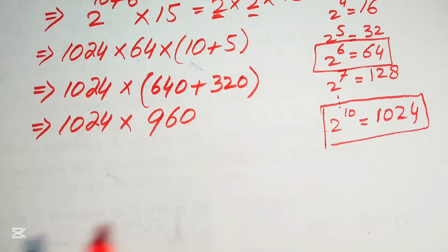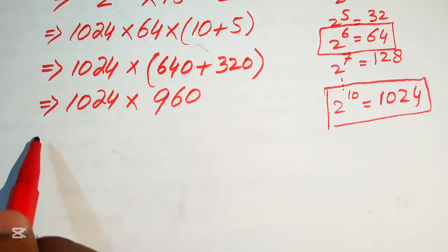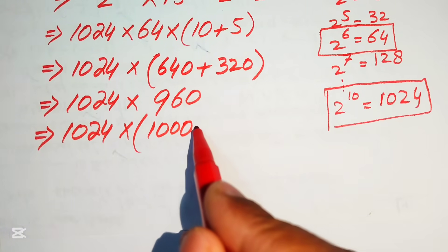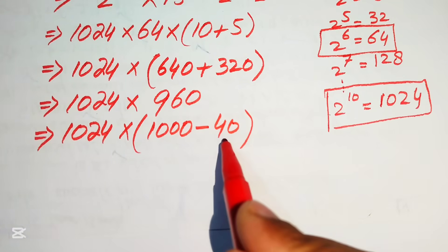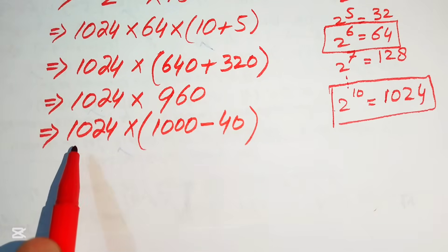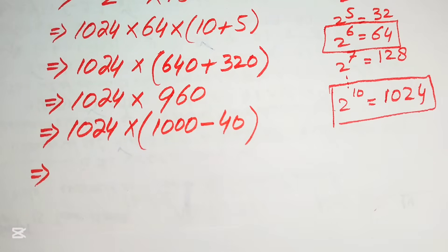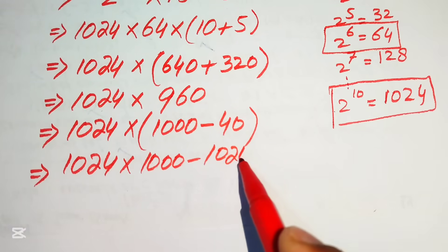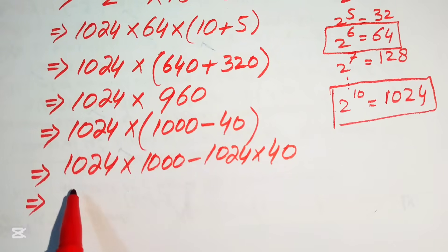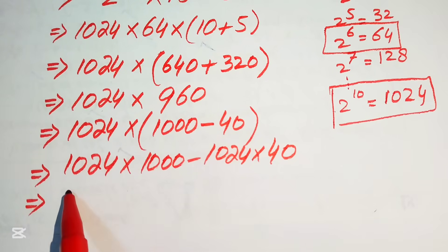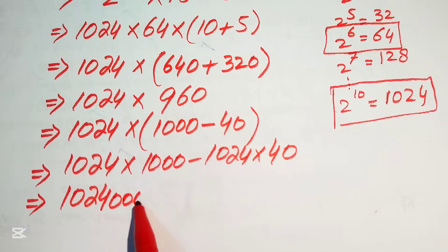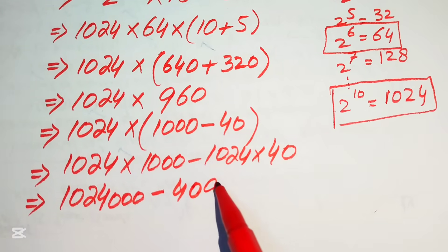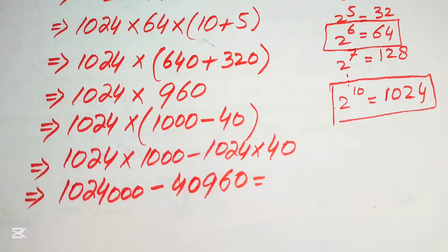We break 960 as 1000 minus 40. We multiply 1024 by both terms: 1024 times 1000 equals 1,024,000, and 1024 times 40 equals 40,960. So we need to subtract these two values using the traditional method of subtraction.